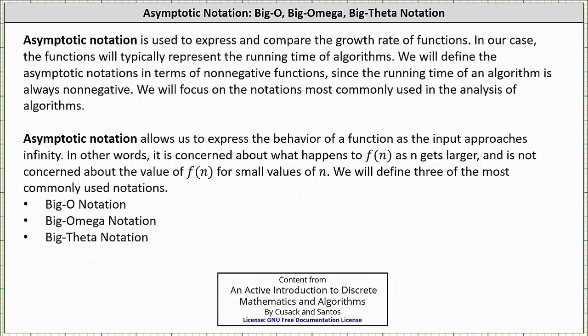Welcome to a lesson on big omega notation. Asymptotic notation is used to express and compare the growth rate of functions. In our case, the functions will typically represent the running time of algorithms. We will define the asymptotic notations in terms of non-negative functions since the running time of an algorithm is always non-negative. We will focus on the notations most commonly used in the analysis of algorithms, which are big O notation, big omega notation, and big theta notation. This lesson will focus only on big omega notation.